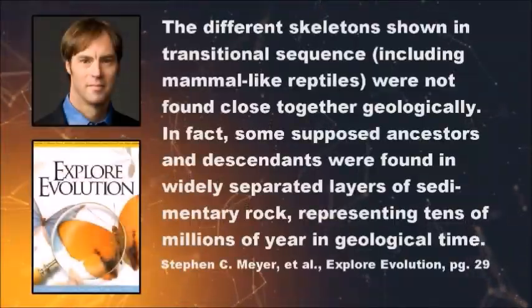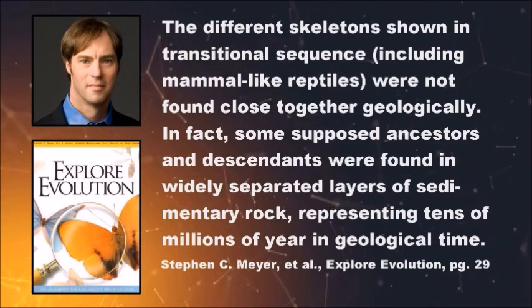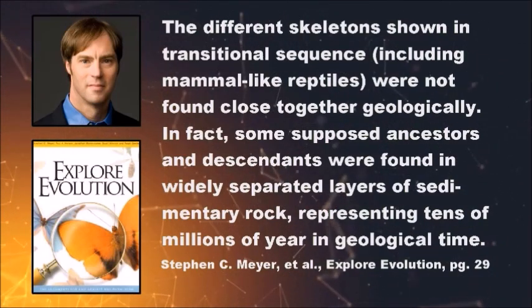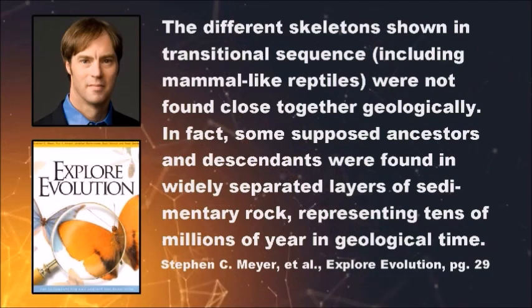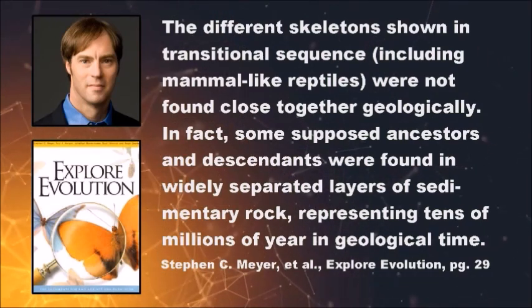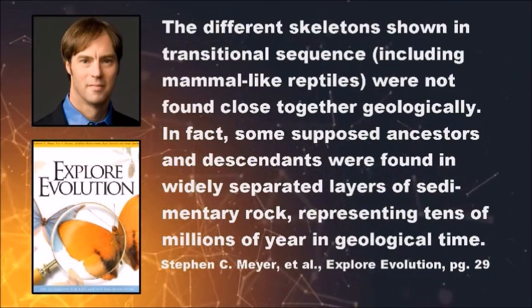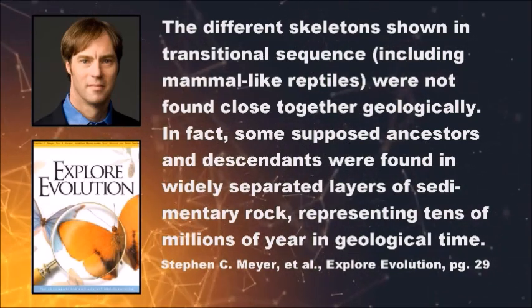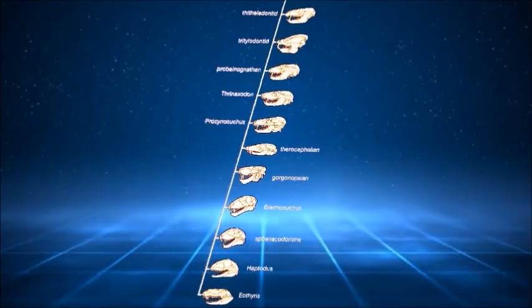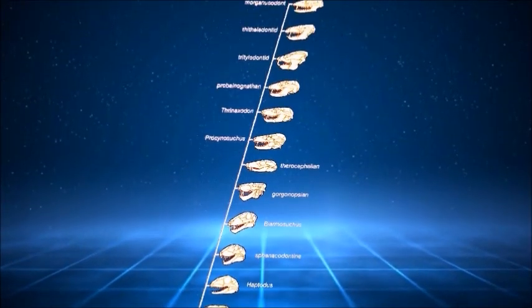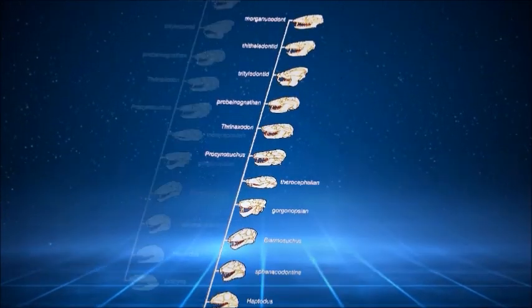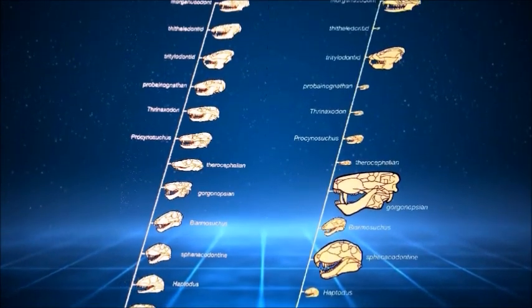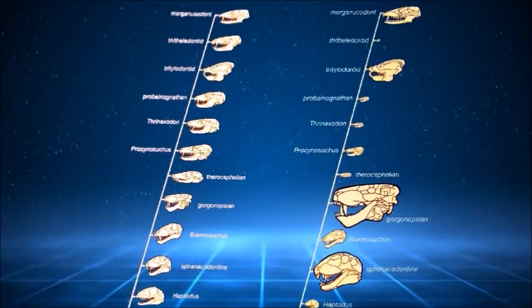Stephen Meyer says: 'The different skeletons shown in transitional sequence, including mammal-like reptiles, were not found close together geologically. In fact, some supposed ancestors and descendants were found in widely separated layers of sedimentary rocks representing tens of millions of years in geological time.' Additionally, evolutionists often alter the sizes of the fossils to make them all look about the same. In reality, the sizes of the fossils vary greatly, making it unlikely that we are witnessing a lineage of any kind.